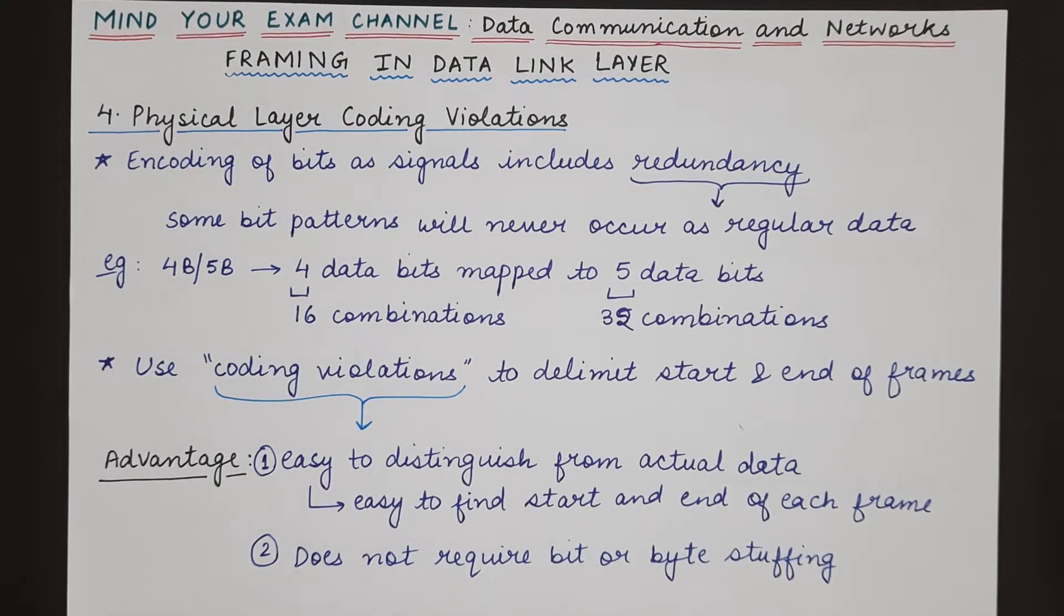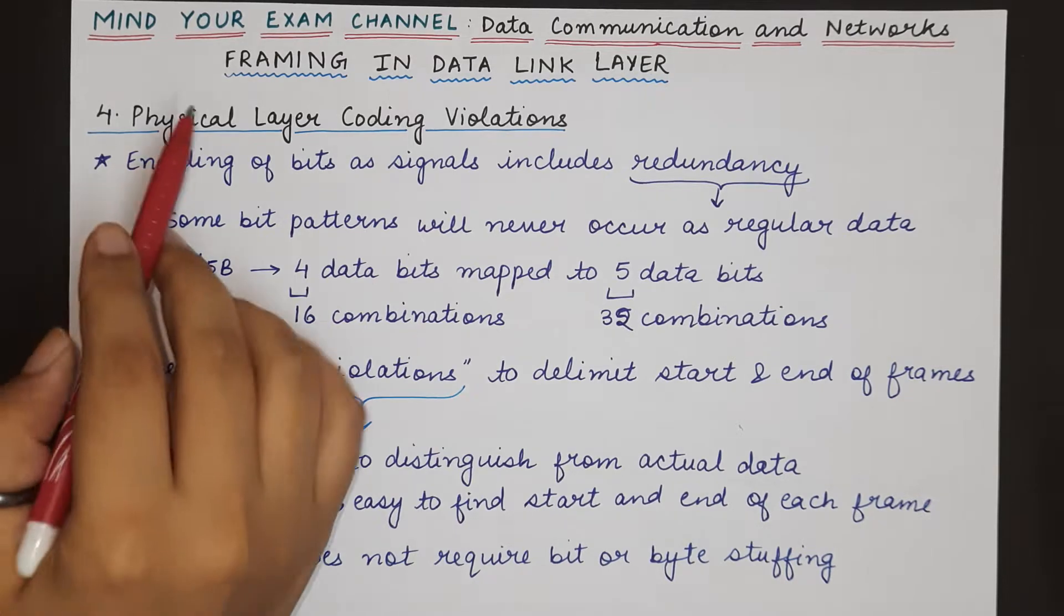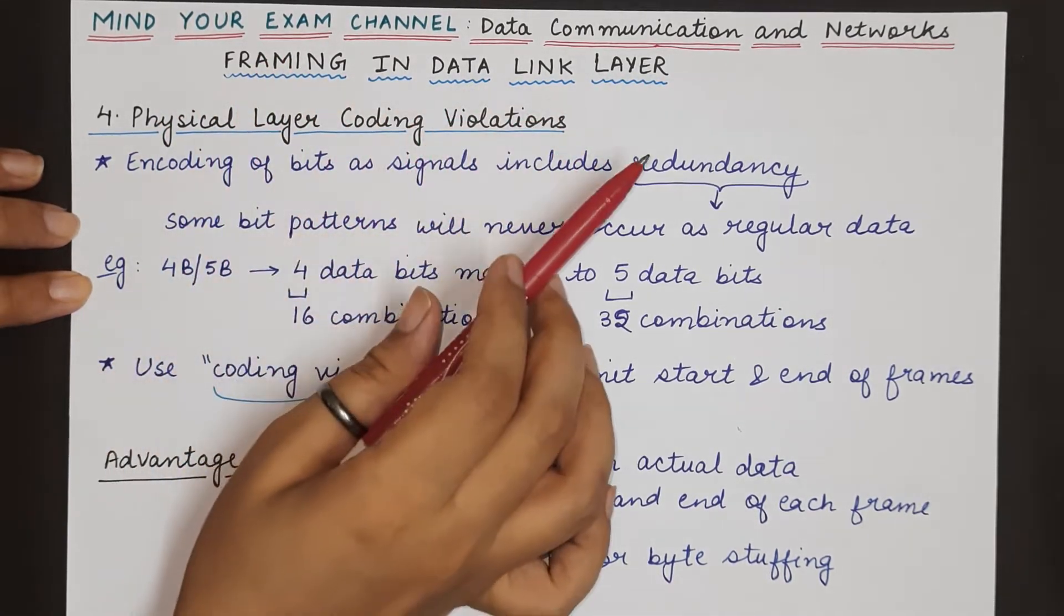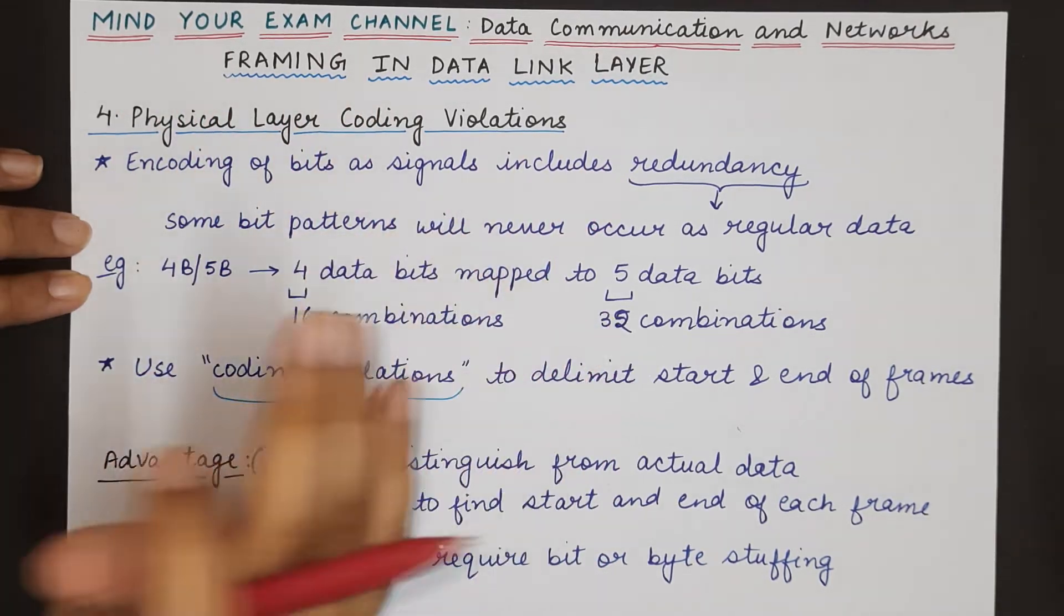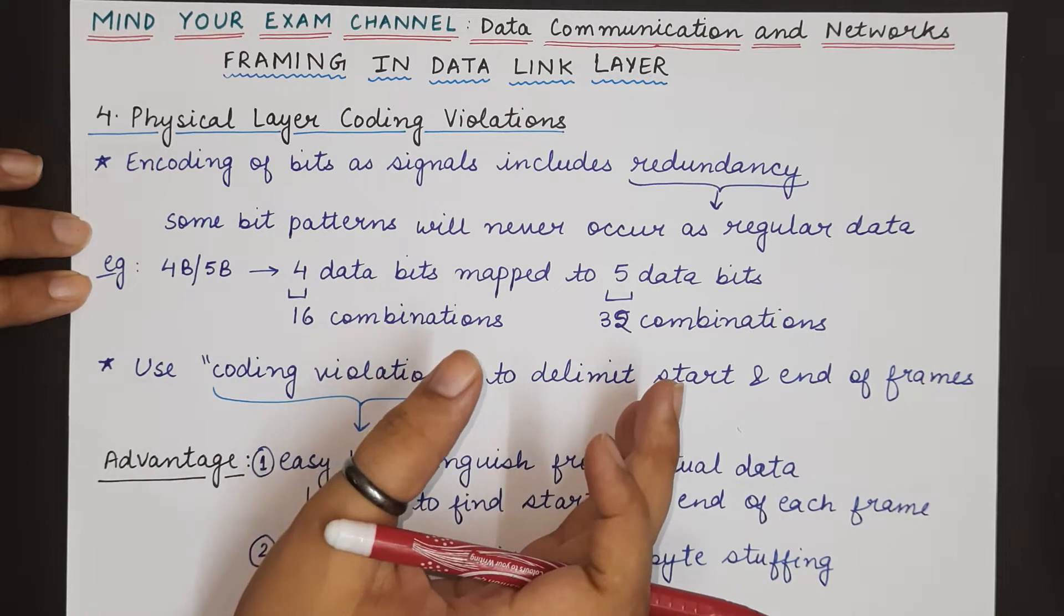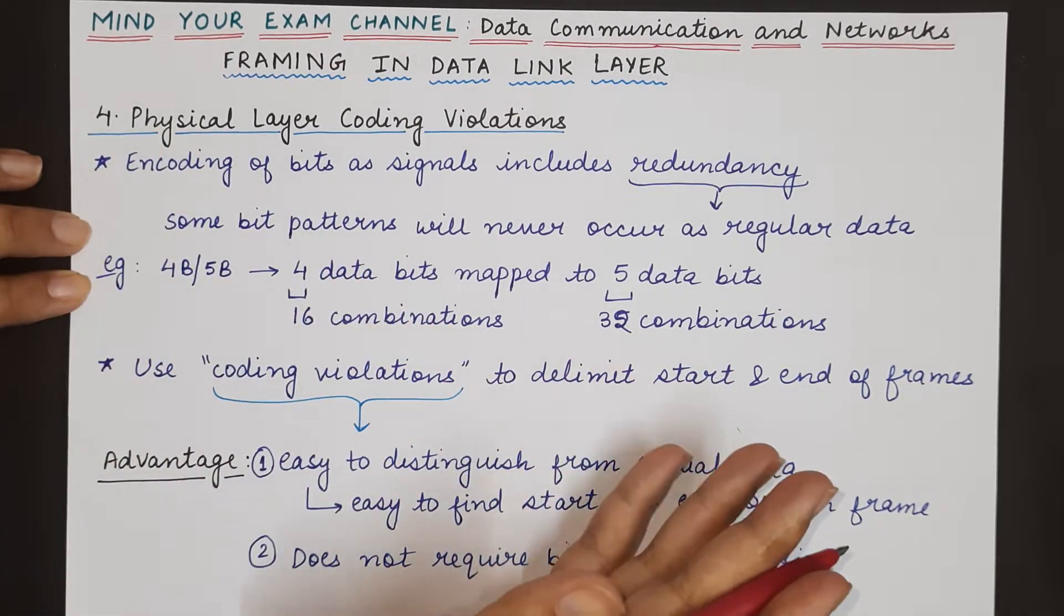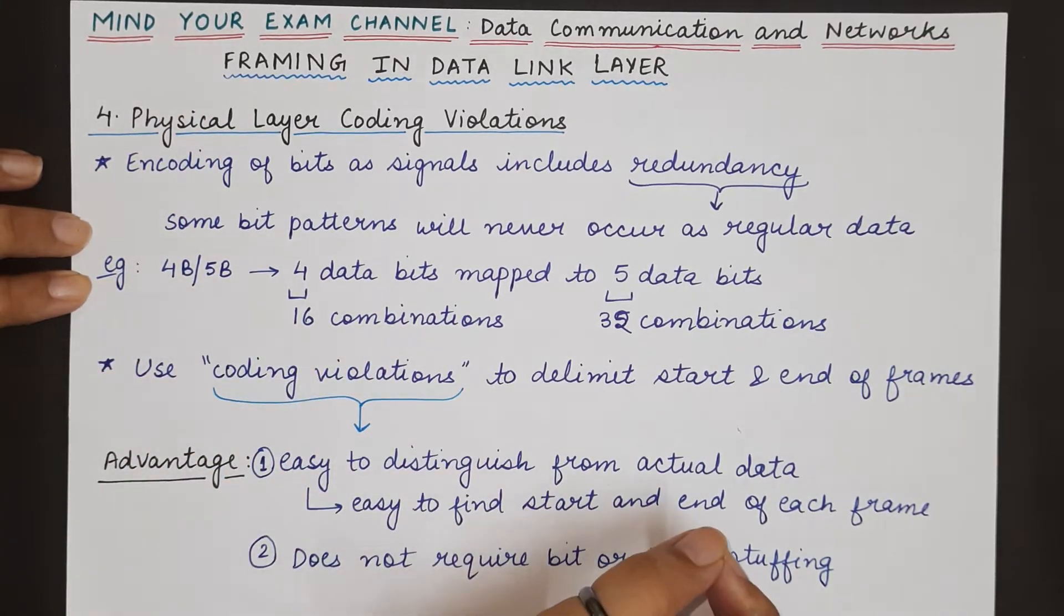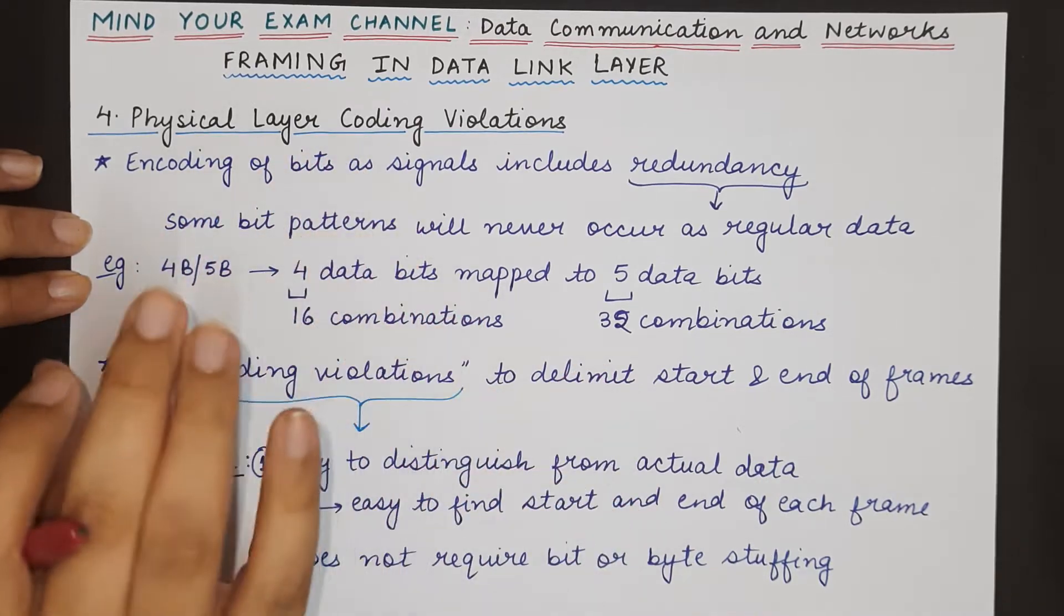Hello everyone, welcome back to my channel Mind Your Exam. In this video we will be seeing the last and the fourth technique for performing framing in data link layer. Framing means converting the raw bit stream into frames at the data link layer at the sender side, so that the data link layer at the receiver side can correctly understand where each frame starts and where it ends.